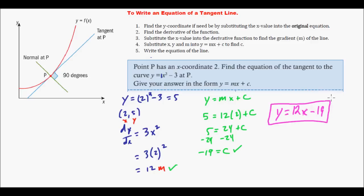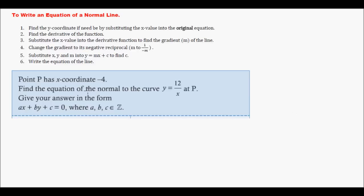Let's write a normal line now. To write a normal line, equation of a normal line, you do the same exact thing. You find the y coordinate, derivative, sub in the x value. Now, the only difference here is right here - change the gradient to its negative reciprocal because it's perpendicular. And you do the exact same thing.